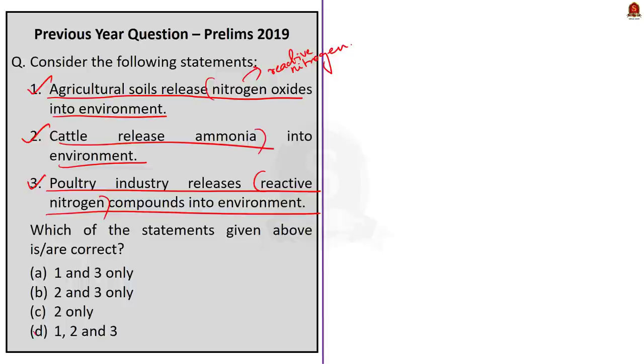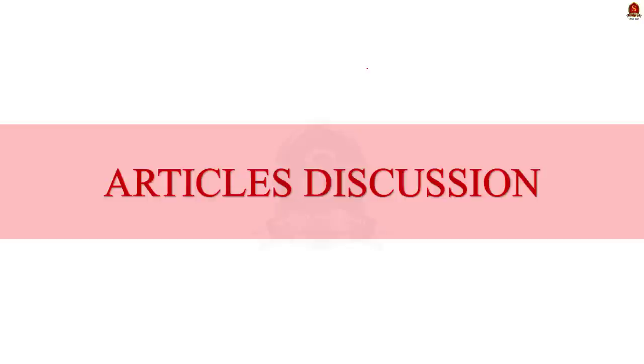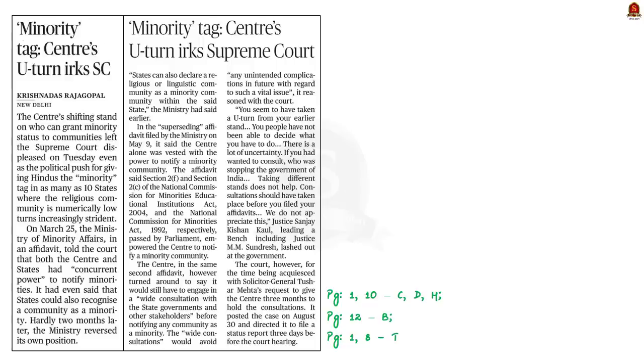And that is why the correct answer to this question is option D, 1, 2, and 3. So, I hope you had an understanding about the pollution from agriculture and allied activities. So, with this question, now let us move on to the next session of article discussion session. Let us take up the first news article.